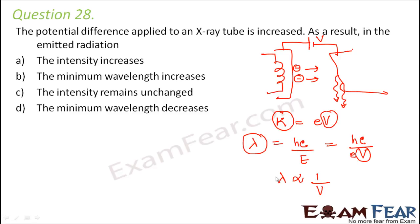When the potential difference increases, the minimum wavelength decreases — so that is one correct option. Another correct option is that intensity remains unchanged: changing the potential difference does not cause any change in the intensity of the X-ray being produced. So both 'minimum wavelength decreases' and 'intensity remains unchanged' are correct.